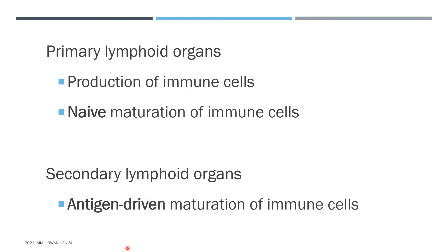Naive maturation is different from what occurs in secondary lymphoid organs, which is called antigen-driven maturation. For naive maturation, the immune cells develop in the absence of antigen — just think of antigen as pathogen molecules for now. The immune cells raised in naive maturation are called naive cells. These naive cells then move to the secondary lymphoid organs, where they undergo antigen-driven maturation, developing in the presence of antigen. Naive cells are like naive soldiers who have not yet seen the enemy — they move to secondary military bases where they are weaponized and trained. In the secondary lymphoid organs, immune cells become fully activated.